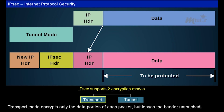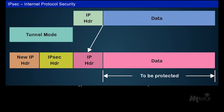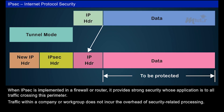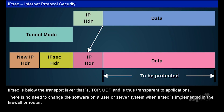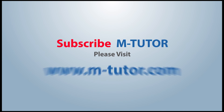Transport mode encrypts only the data portion of each packet but leaves the header untouched. The more secure tunnel mode encrypts both the header and the data portion. When IPSec is implemented in a firewall or router, it provides strong security applied to all traffic crossing that perimeter. Traffic within a company or workgroup does not incur the overhead of security-related processing. IPSec operates below the transport layer (TCP/UDP) and is thus transparent to applications, requiring no changes to user or server software.